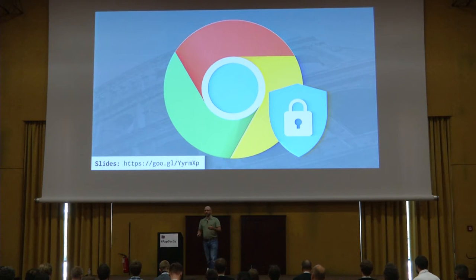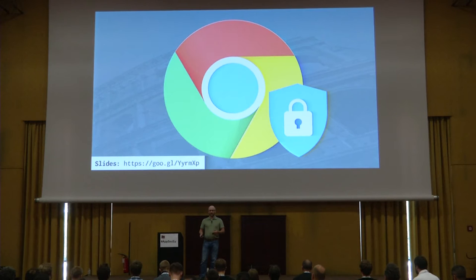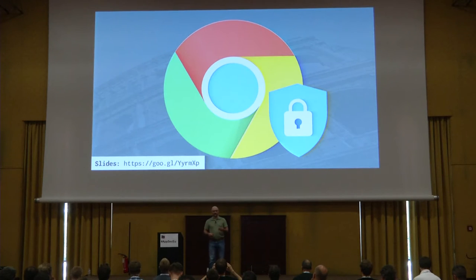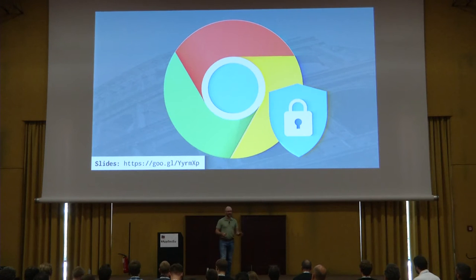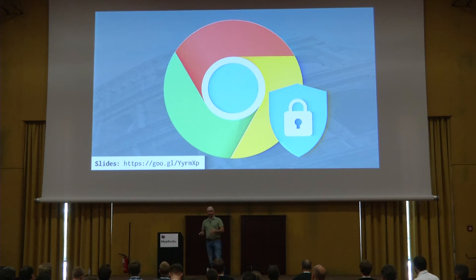We also have a team working on finding bugs, which harkens back to Charlie's talk yesterday morning. That team does both static and dynamic analysis — examining code and helping with code reviews, looking statically at code before it lands, but also doing a lot of dynamic analysis. We fuzz Chrome continuously. Charlie asked rhetorically how do you know when you're done fuzzing — I think the Chrome team has answered: you never turn the fuzzer off. Fuzzing is incredibly important; if you have a computer sitting idle, you should be running a fuzzer because you will find bugs early and fix them before they affect your users.